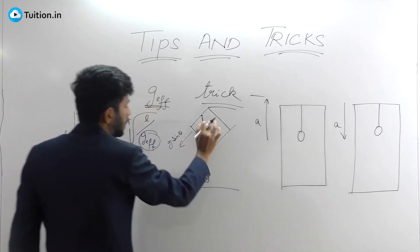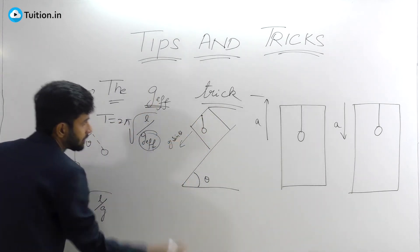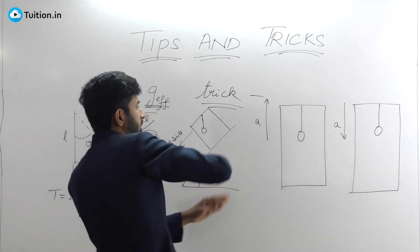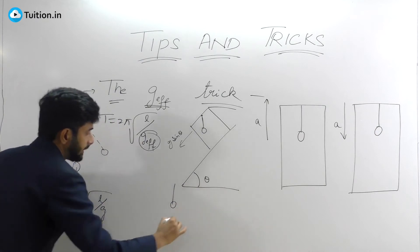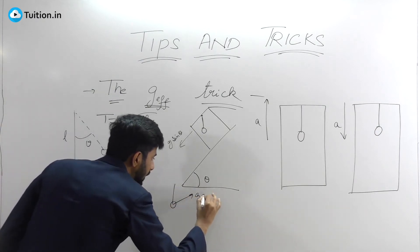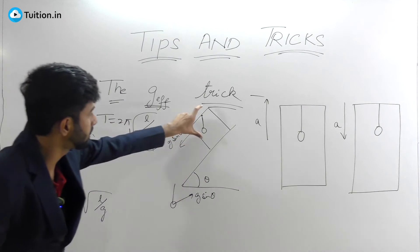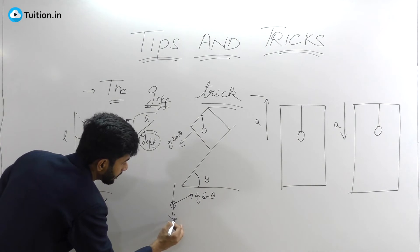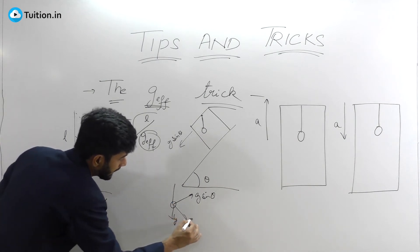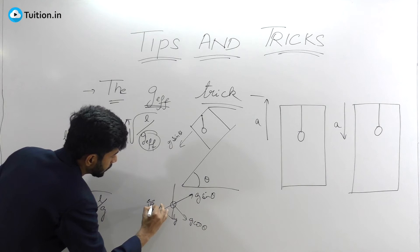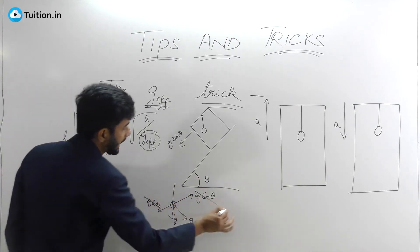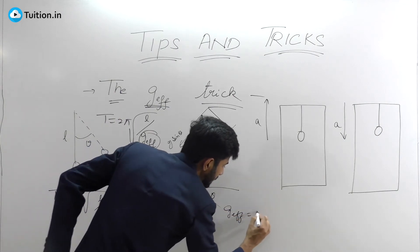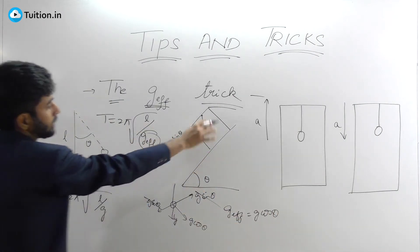Let's say the box is moving down with acceleration g sin θ. Since it's an accelerating frame, you apply a pseudo force of g sin θ on the opposite side. You have g acting downward, which you split into g cos θ and g sin θ. The g sin θ component gets cancelled by the pseudo force from the accelerating frame, so your effective g is simply g cos θ.